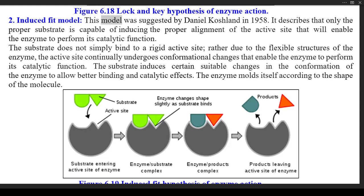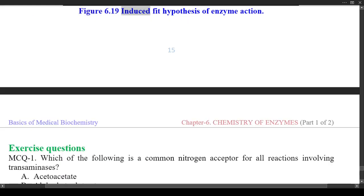(2) Induced Fit Model — this model was suggested by Daniel Koshland in 1958. It describes that only the proper substrate is capable of inducing the proper alignment of the active site that will enable the enzyme to perform its catalytic function. The substrate does not simply bind to a rigid active site; rather, due to the flexible structures of the enzyme, the active site continually undergoes conformational changes. The substrate induces suitable changes in the conformation of the enzyme to allow better binding and catalytic effects — the enzyme molds itself according to the shape of the molecule. Figure 6.19 shows the induced fit hypothesis of enzyme action.